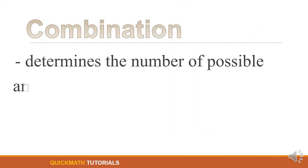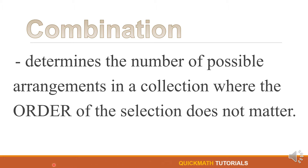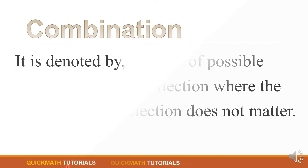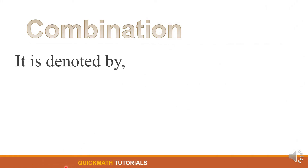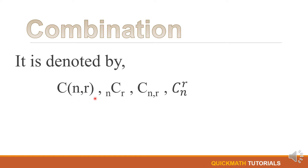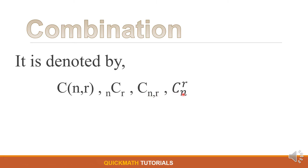First, let's have the definition of combination. Combination determines the number of possible arrangements in a collection where the order of the selection does not matter. It is denoted by C(n, r), or in some books written as n-sub-C-sub-r, C-sub-n-comma-r, or C-sub-n to the power of r.